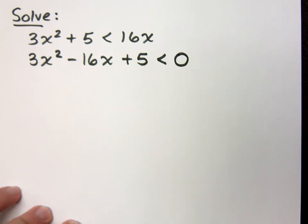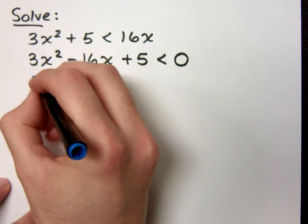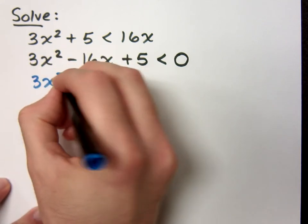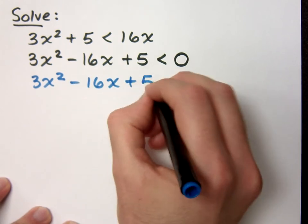Now according to the steps that we have here for solving this, I need to treat it like an equation. And then I solve it using quadratic methods. So I want to be able to see this as 3x² - 16x + 5 = 0.